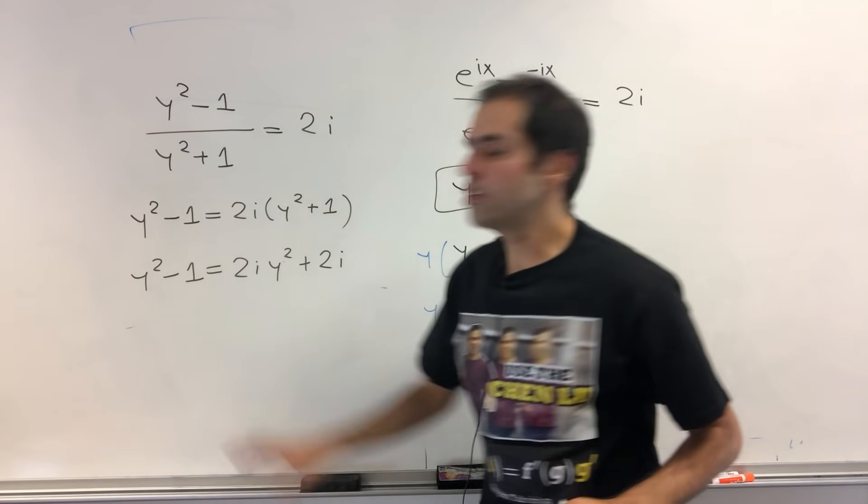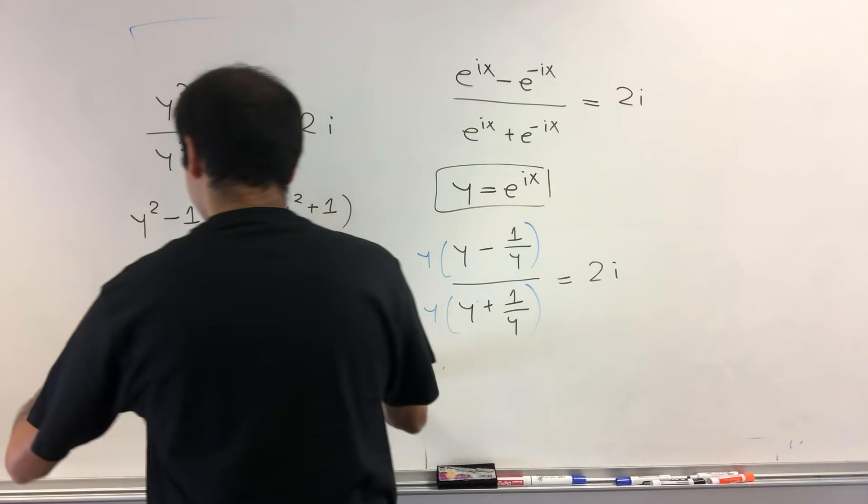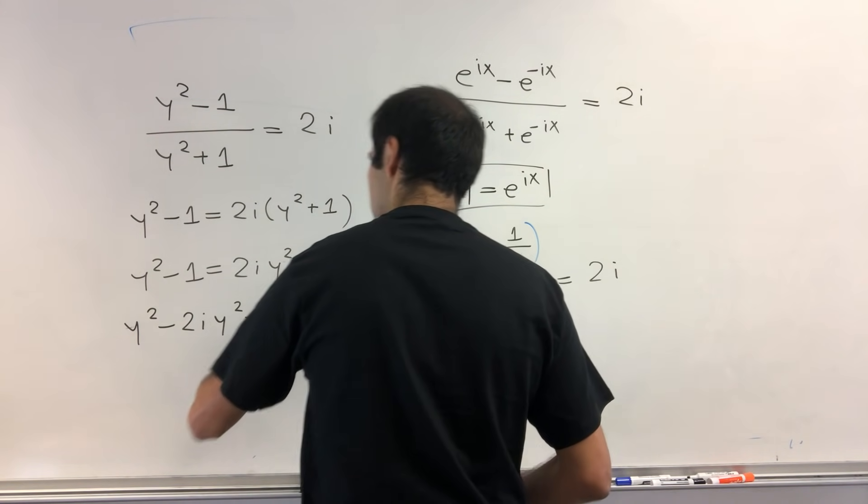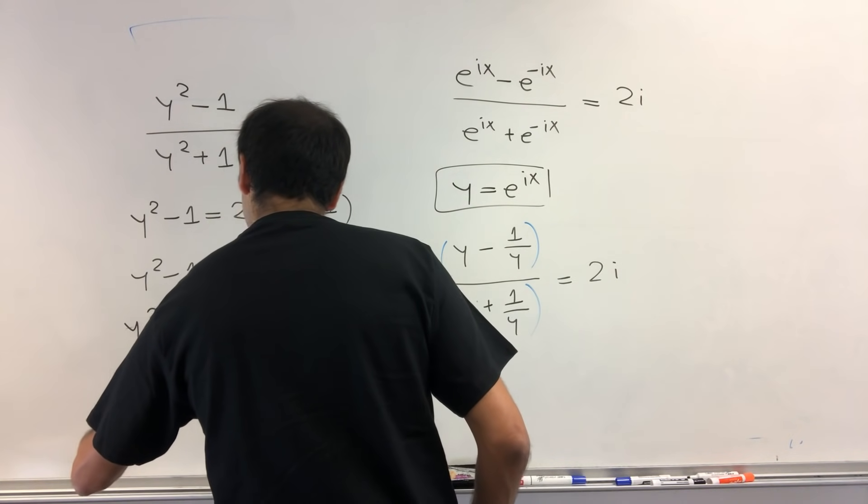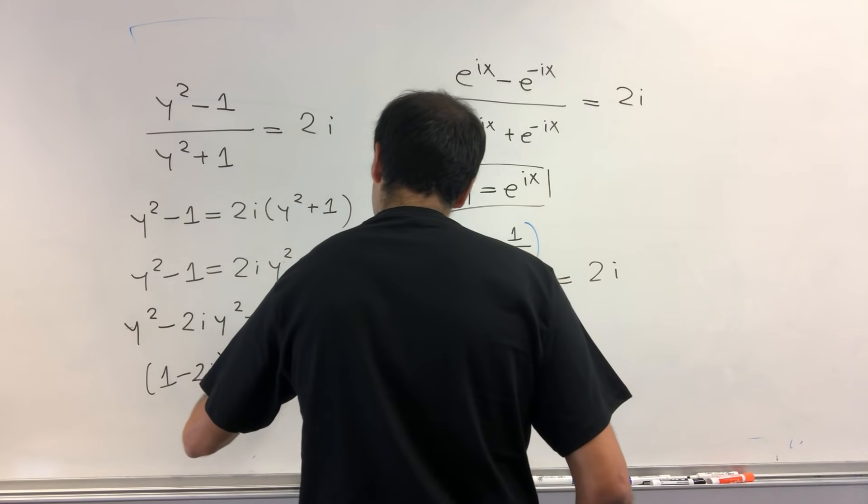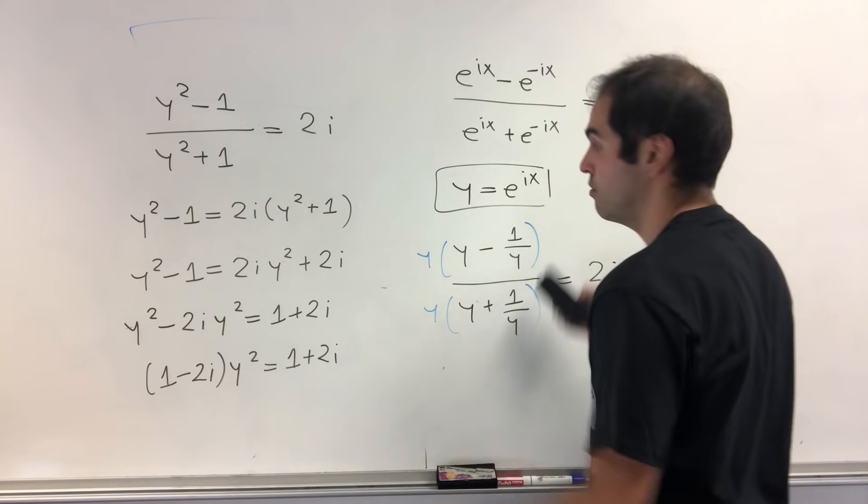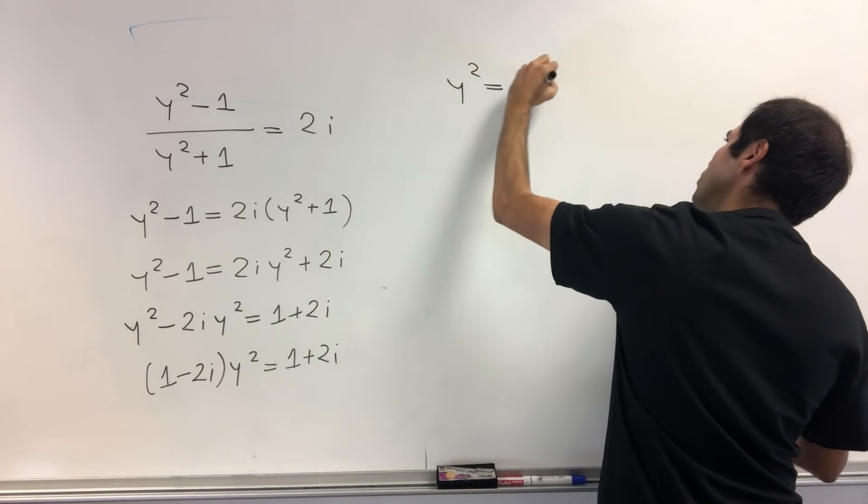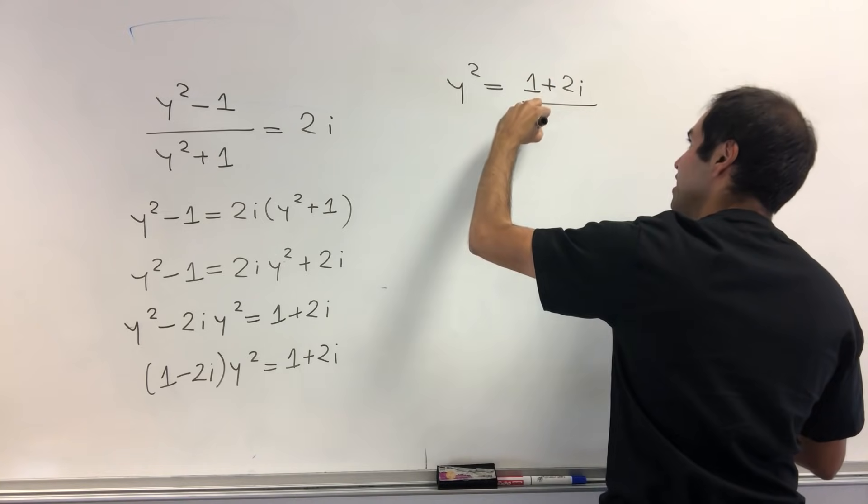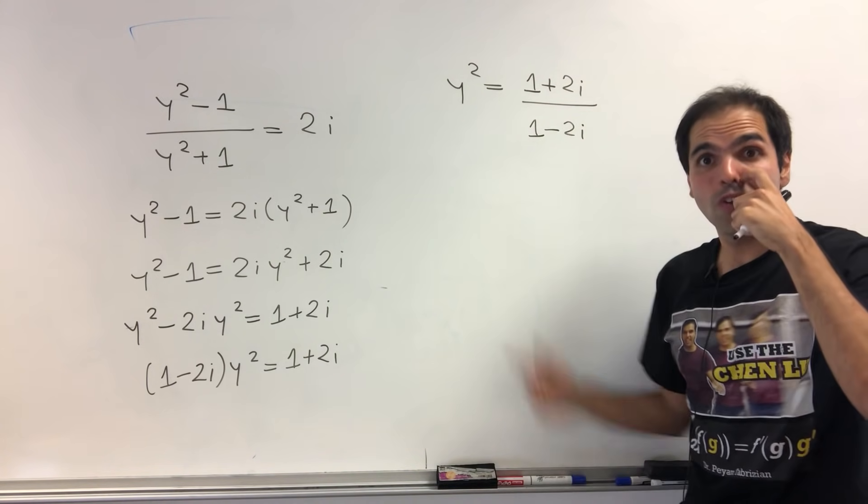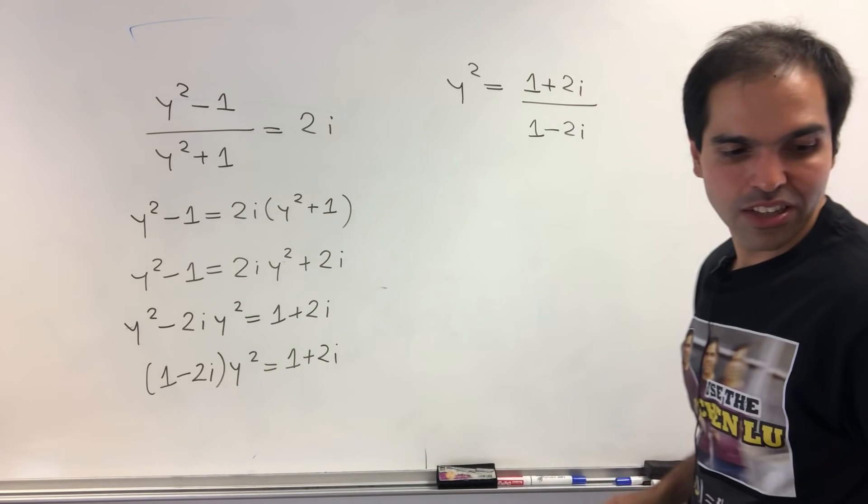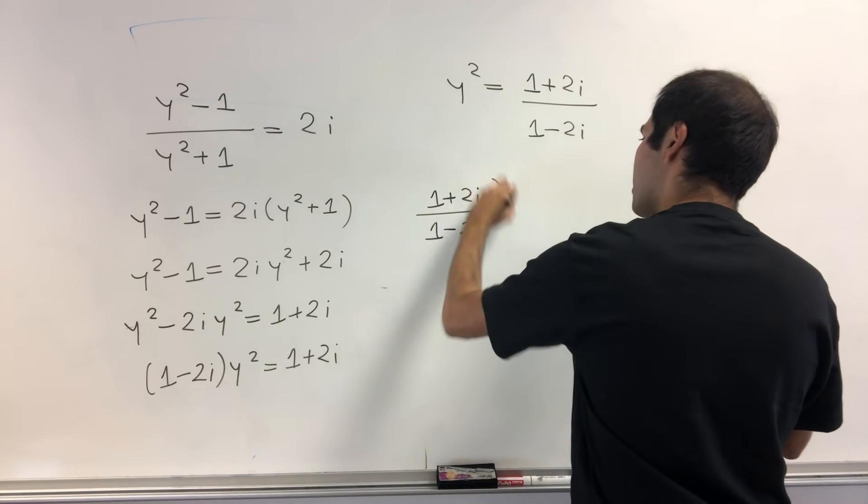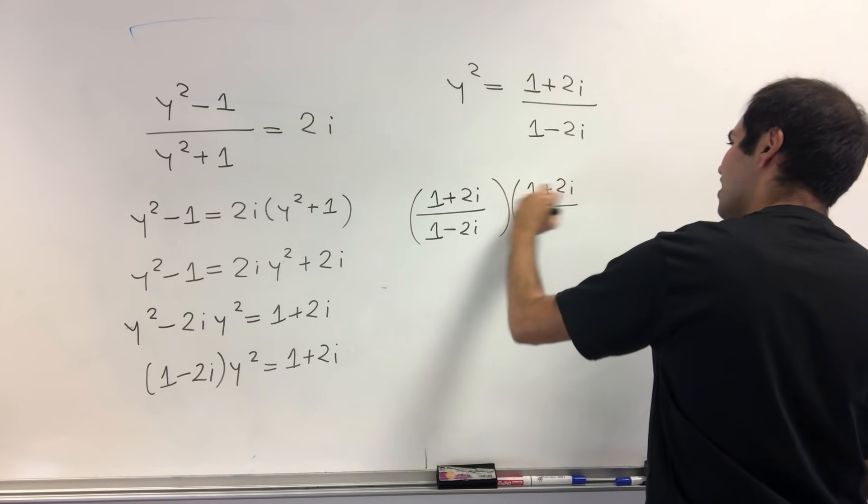And then let's put the square terms on the left-hand side. So what we get is, I think, y squared minus 2i y squared equals 1 plus 2i. So 1 minus 2i y squared equals 1 plus 2i. And then you can solve for y squared. So y squared equals 1 plus 2i over 1 minus 2i. And as usual, I don't like i to be on the bottom, so let's try to simplify this. So 1 plus 2i over 1 minus 2i, let's try to multiply this by 1 plus 2i on both sides.